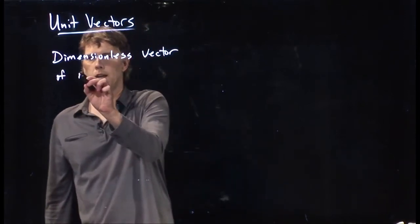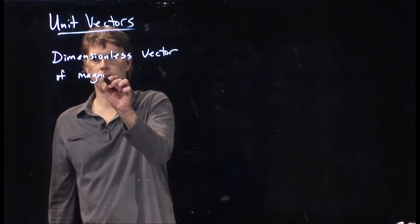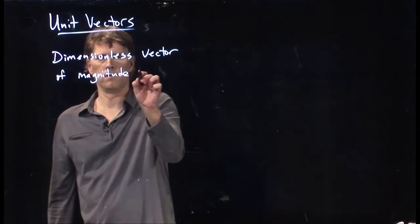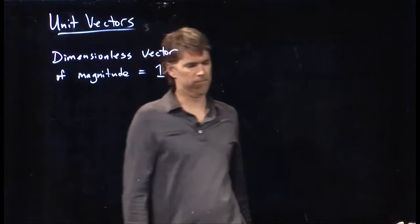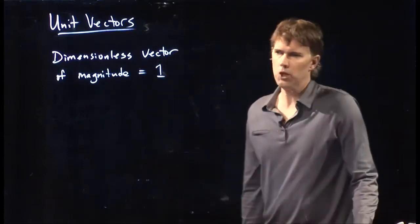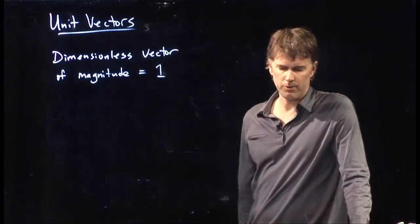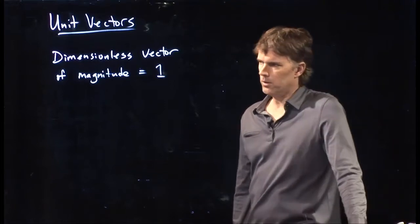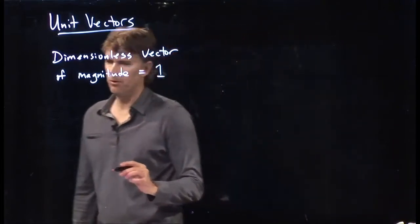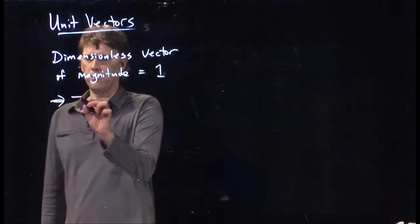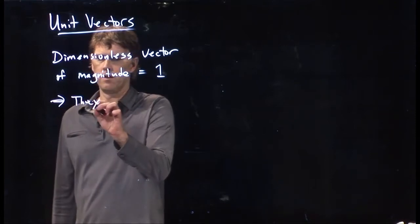And it has a magnitude equal to 1. And that's why it's called a unit vector. It's 1 unit. So the only thing that unit vectors do is they specify direction.